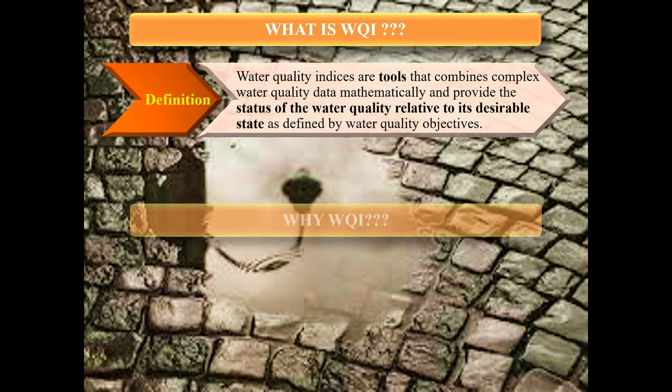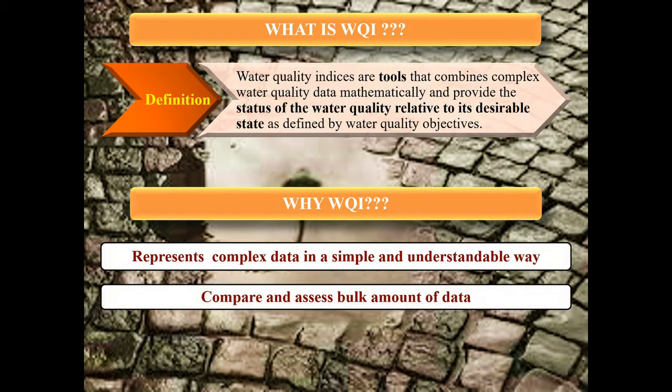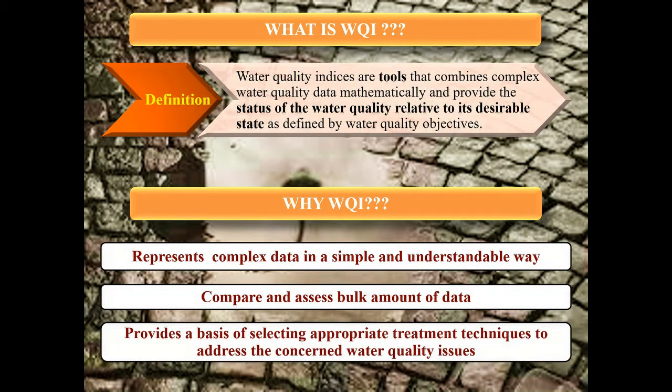Its advantages are such that it has become indispensable for water quality assessment. WQI is extensively used because it represents complex water quality data in a simple and understandable way, easily communicable to general public and administration. Water quality data usually comes in huge amount. Water quality index is a very efficient tool to compare and assess such bulk amount of data. It is also used for selecting appropriate treatment techniques to address the concerned water quality issues.